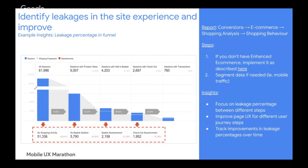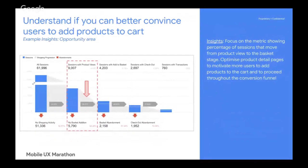Another insight within the same report is to focus on the opportunity area: how can you optimize product detail pages to motivate more users to add products? For example, are users interested in certain colors more than others? If you have a product in various colors, test which colors sell out more or encourage users to add them to the cart. These are some of the ways to answer questions about user behavior on your website.